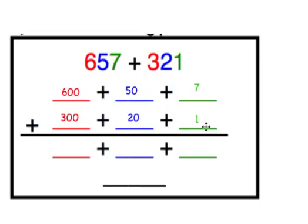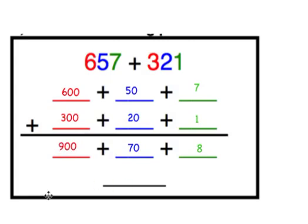Now that we have written both numbers in expanded form, we can add together the ones, the tens, and the hundreds. 7 plus 1 is 8. 50 plus 20 is 70. And 600 plus 300 is 900. So 900 plus 70 plus 8 gives us our sum of 978.